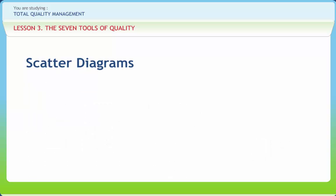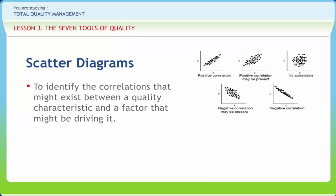Scatter diagrams identify correlations that might exist between a quality characteristic and a factor that might be driving it. They show the correlation between two variables in a process. These variables could be a critical to quality characteristic and a factor affecting it, two factors affecting a CTQ, or two related quality characteristics. The extent to which dots cluster together in a line shows the strength of the relationship.